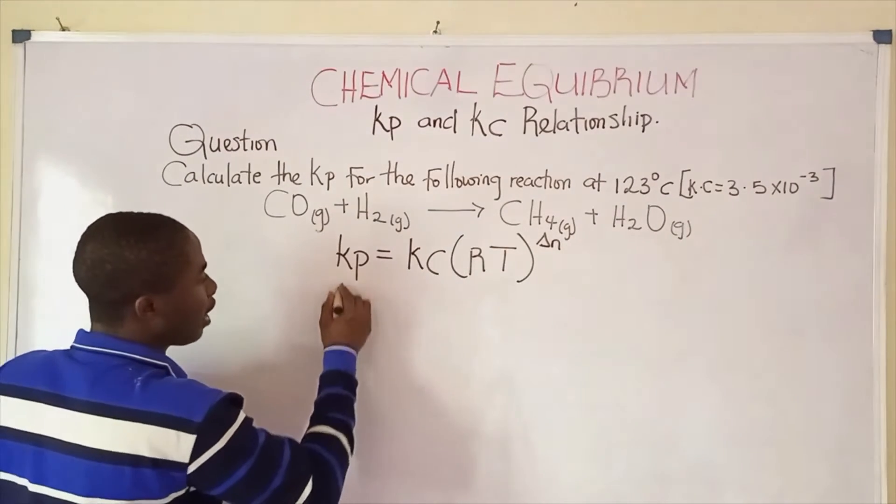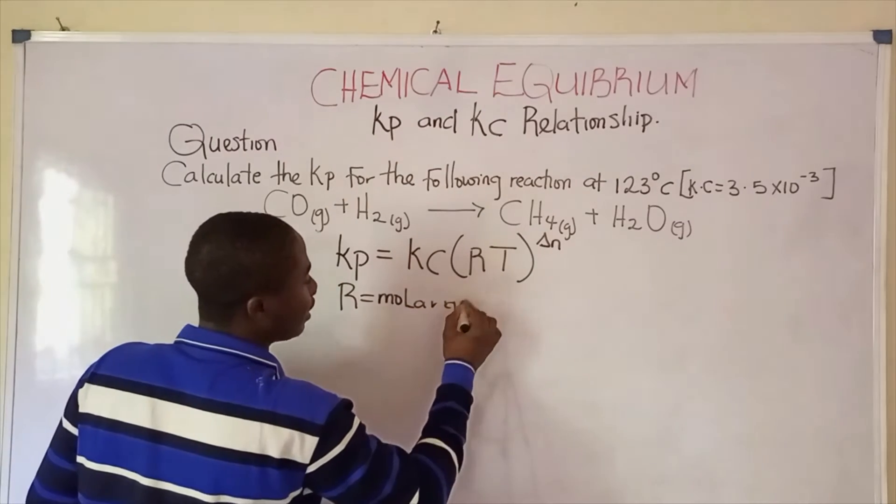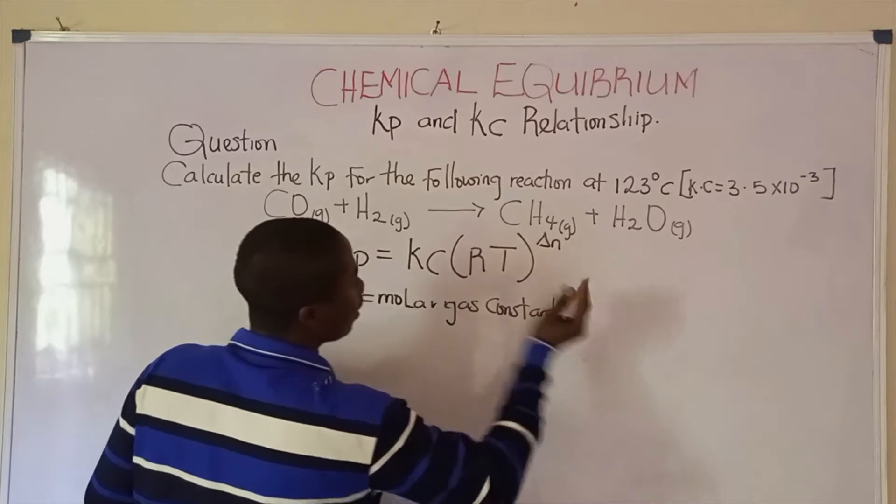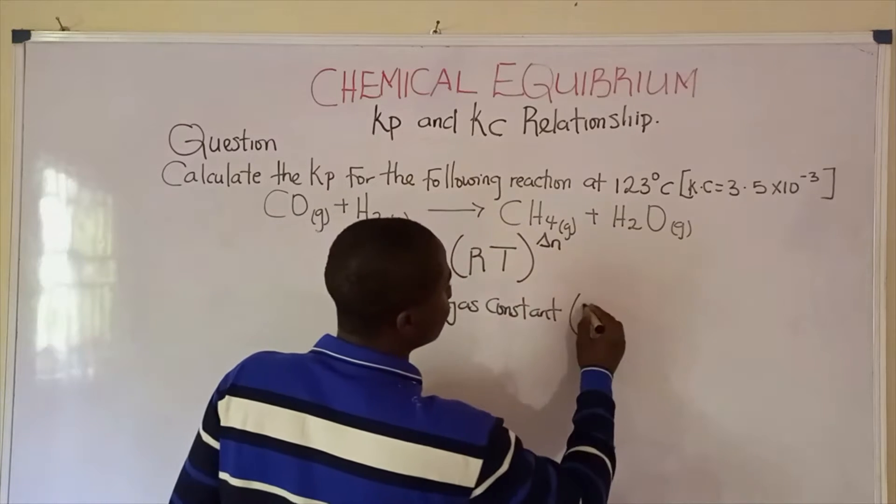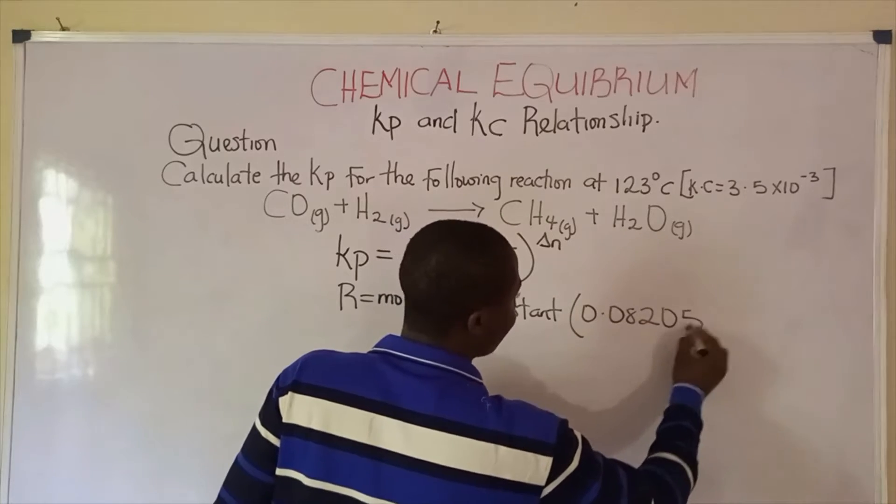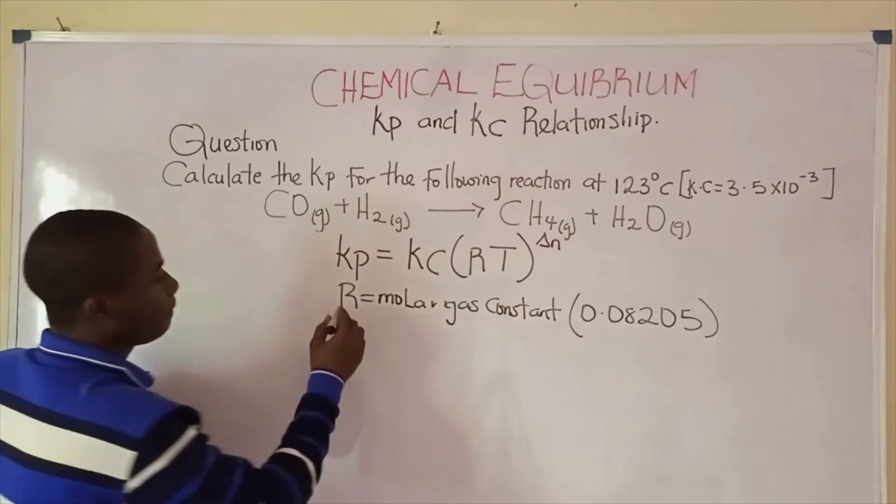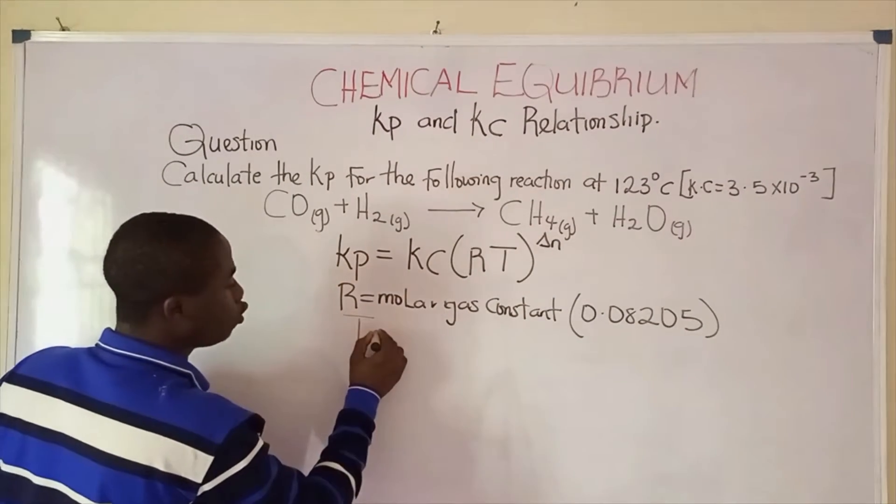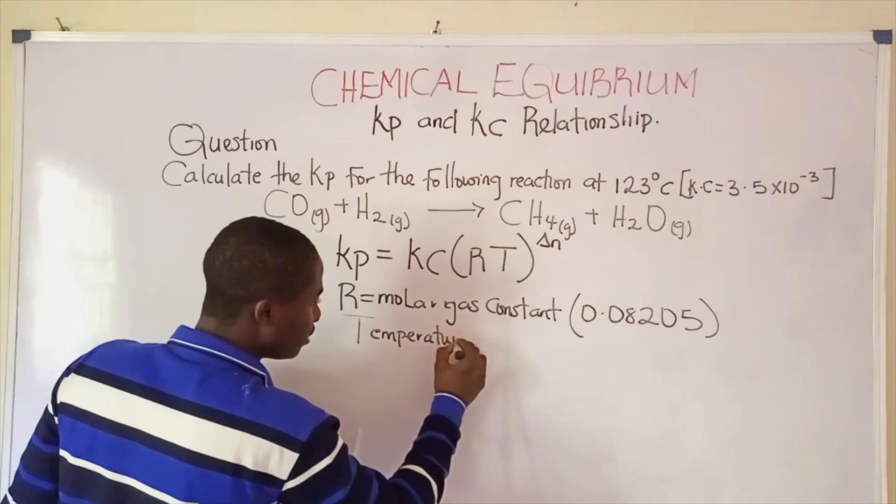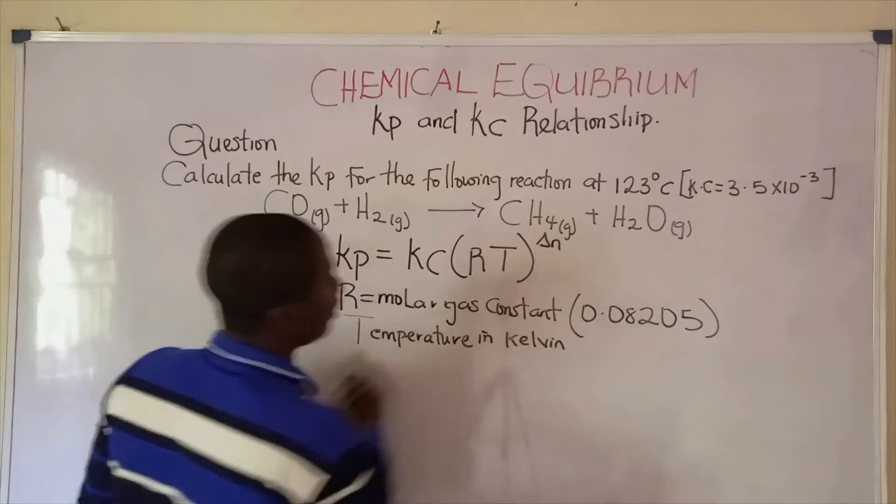What is R? R is called the molar gas constant. In this context, we'll be using the molar gas constant which is 0.08205. Temperature should be in Kelvin scale when solving problems on this aspect.